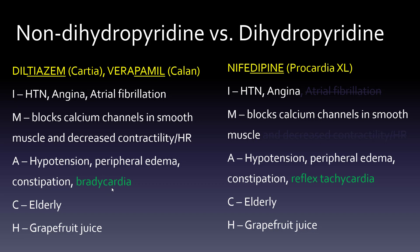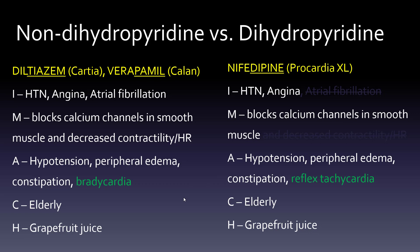Both will cause hypotension, peripheral edema, and constipation. But bradycardia is the issue with non-dihydropyridines, and reflex tachycardia is the issue with dihydropyridines — that vasodilation causes the heart to sometimes increase the heart rate, which may seem counterintuitive. Watch out for the elderly, and grapefruit juice can be an issue with both.